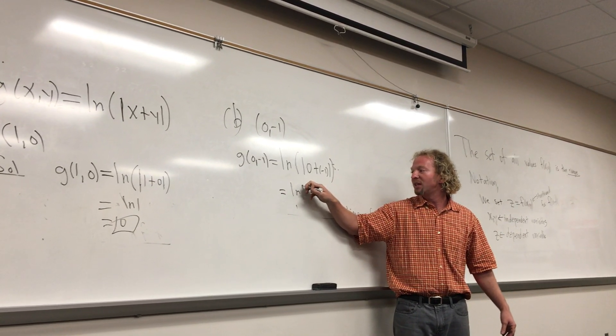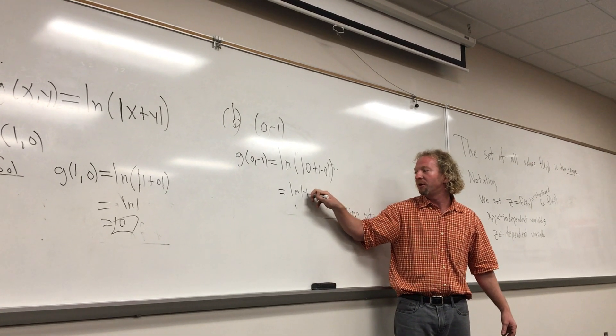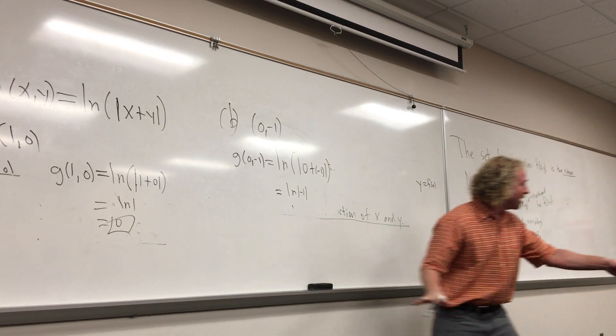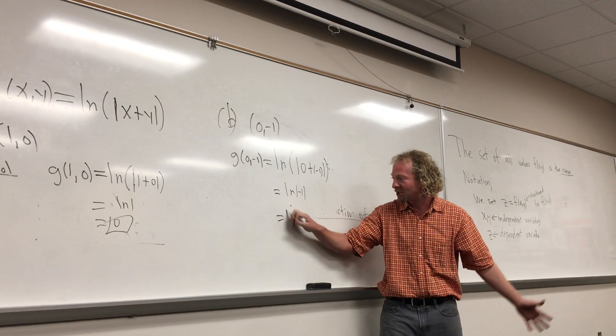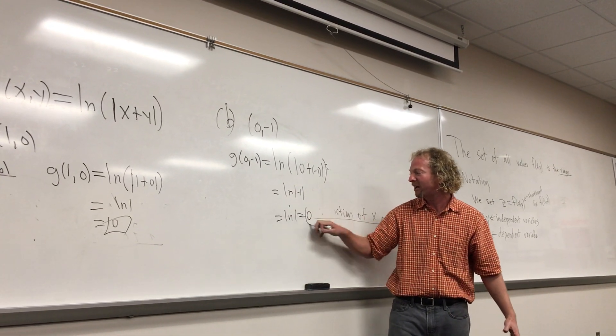So yeah, because we get the absolute value of negative 1. What's the absolute value of negative 1? 1. 1. Yes, we just get the absolute value of 1 again, so we get 0. Oh, it's so rigged.